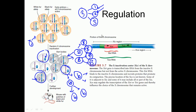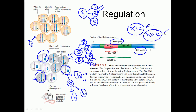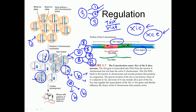At the molecular level, the regulation of X inactivation requires two important regions. One is the X-inactivation center (X-IC), and another is the X chromosome control element (XCE). The X-IC or X-inactivation center consists of several different genes. Among them, two genes are very important: one is called XIST (X-I-S-T) and another is Tsix (T-6). The X-IC region contains XIST and Tsix.